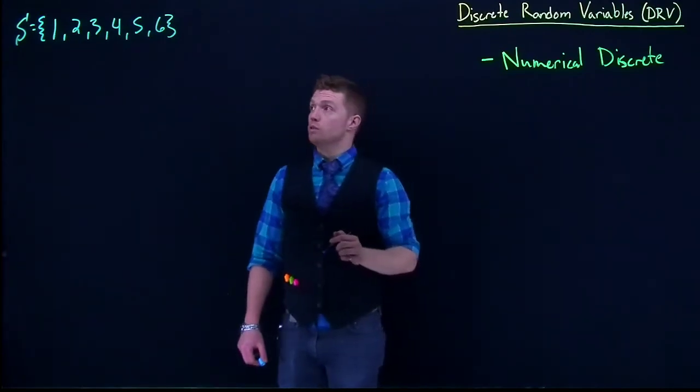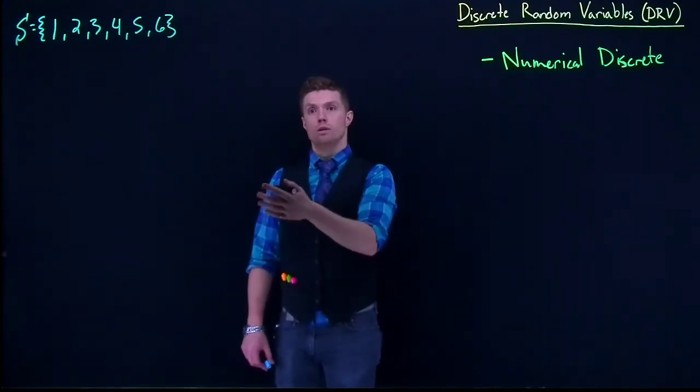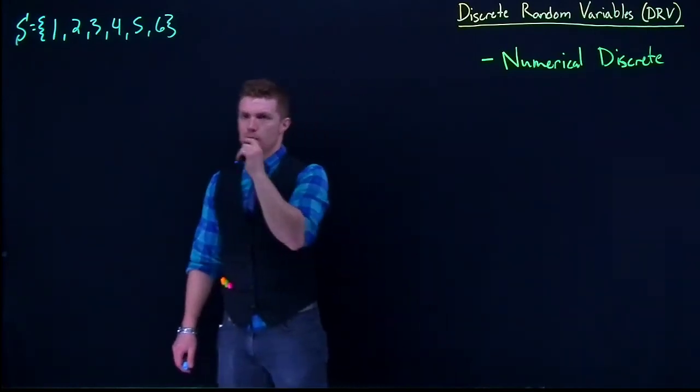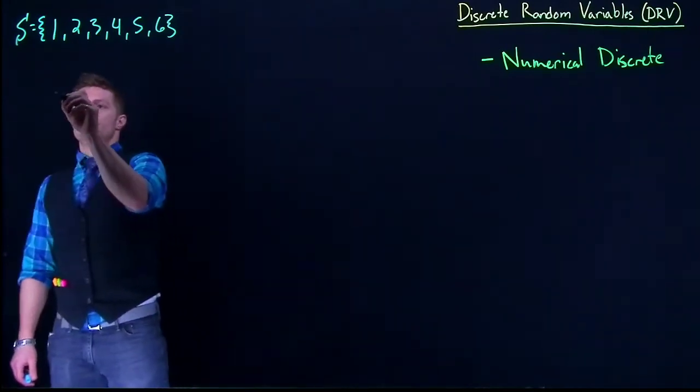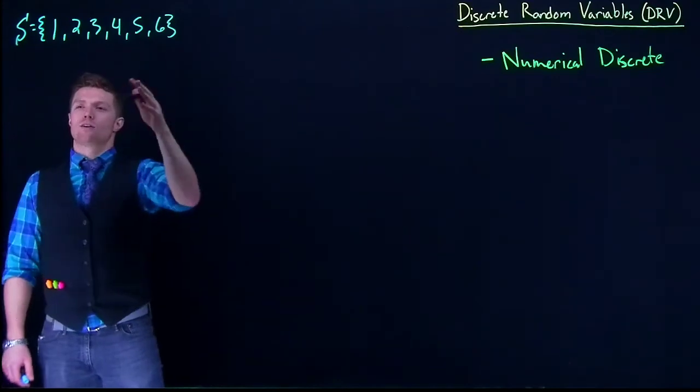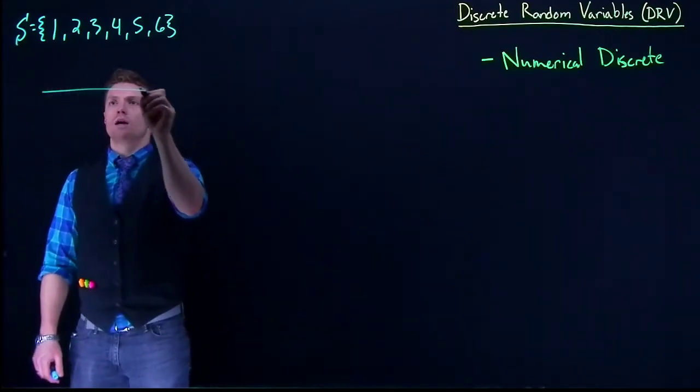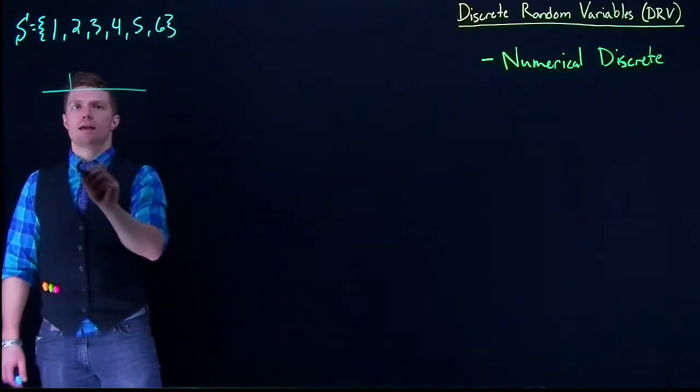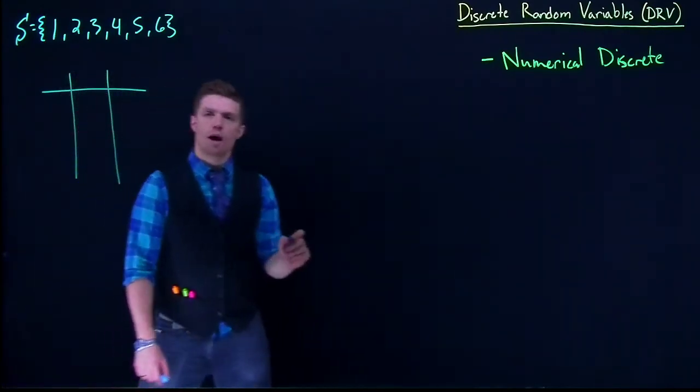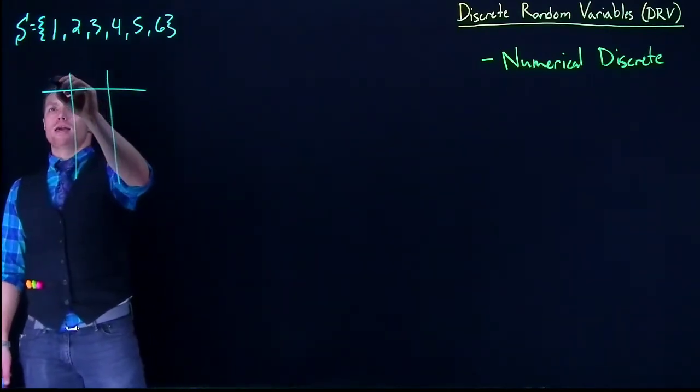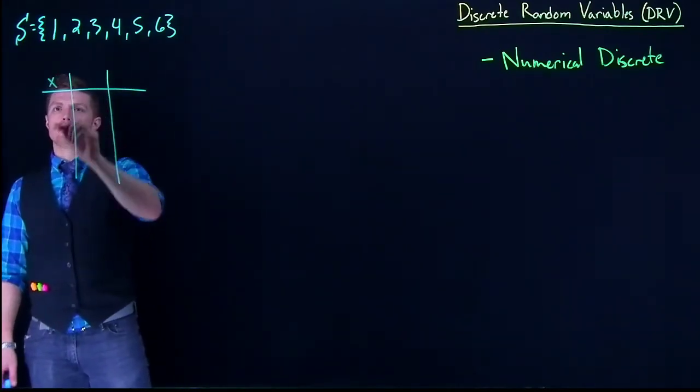We're going to use a new tool to try to organize our possible outcomes. Instead of just writing this out or maybe drawing out a sample space, we're going to draw a new type of table. This table has a couple of new elements to it.